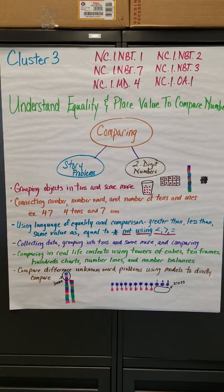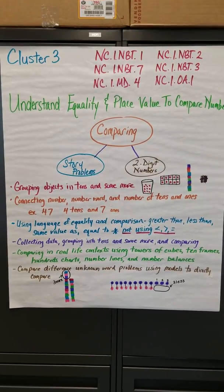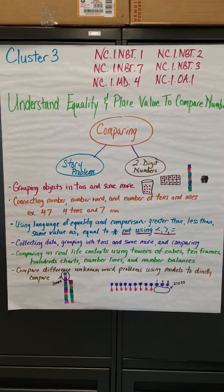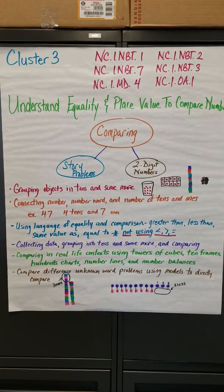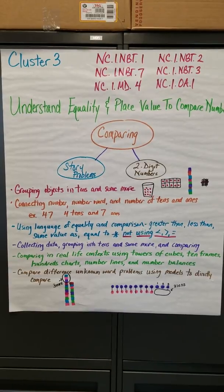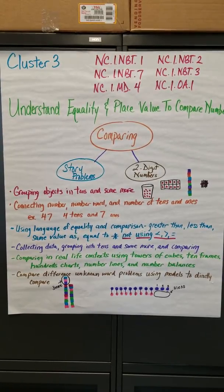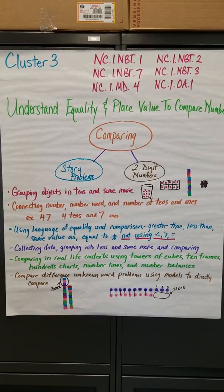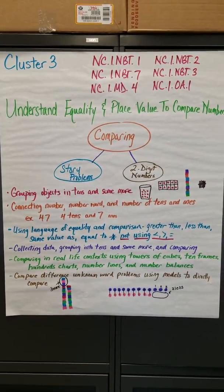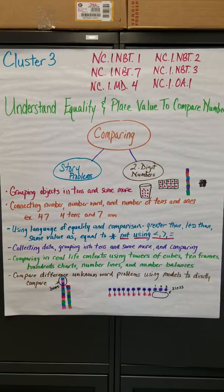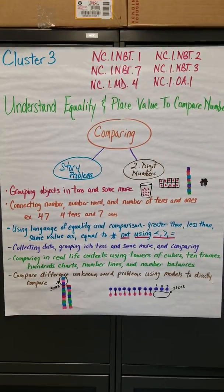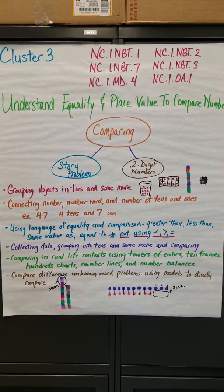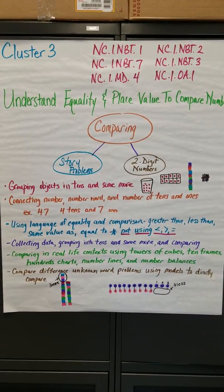Some important considerations in this cluster: students need lots and lots of practice grouping tens and ones and talking about connections between two-digit numbers and the number of tens and ones. Some students may need more support making connections to base ten structure — for example, making sure they understand how many cups of tens would be needed for a number such as 36 beans.